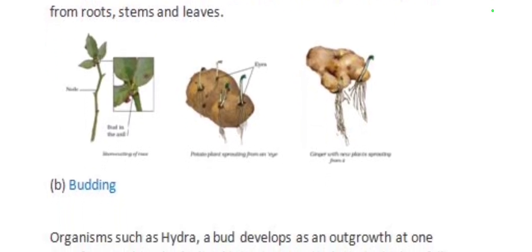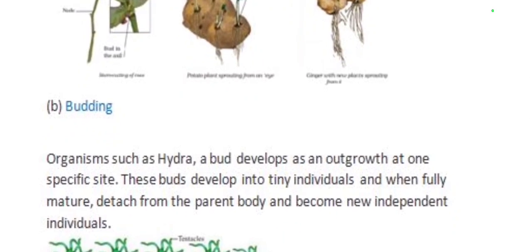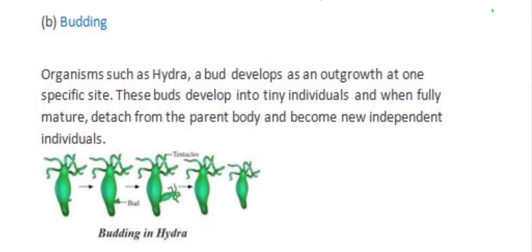The next method is budding. Organisms such as hydra use this method. A bud develops as an outgrowth at one specific site. These buds grow into tiny individuals and when fully mature, detach from the parent body and become new independent individuals. In hydra, a small bud forms on the side, grows, and when fully mature, detaches and becomes a new independent individual.